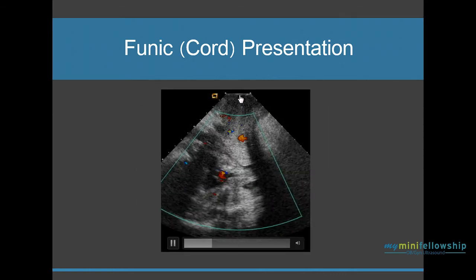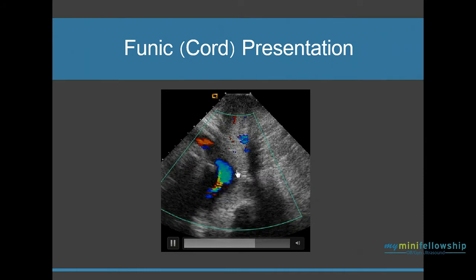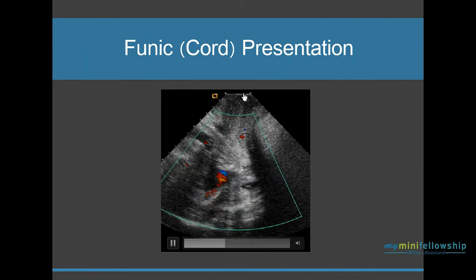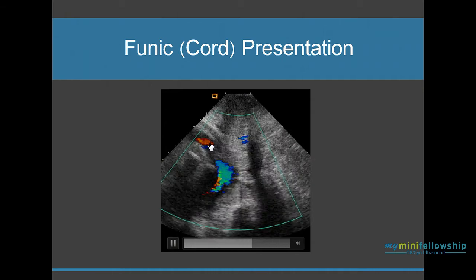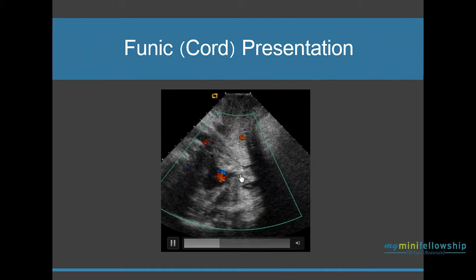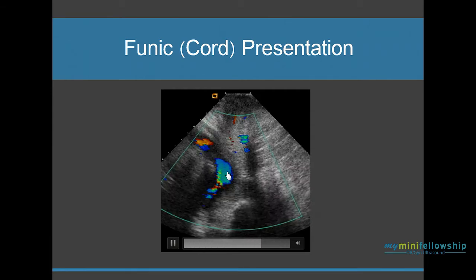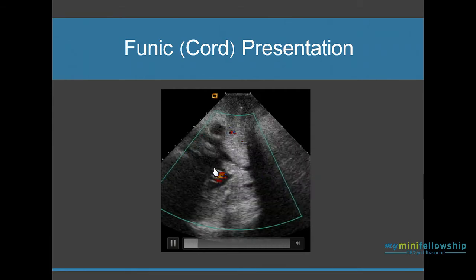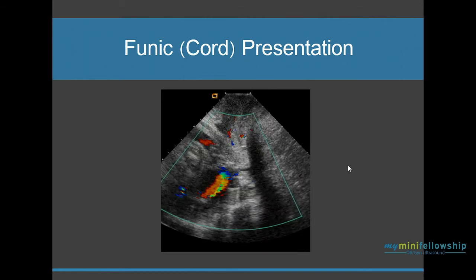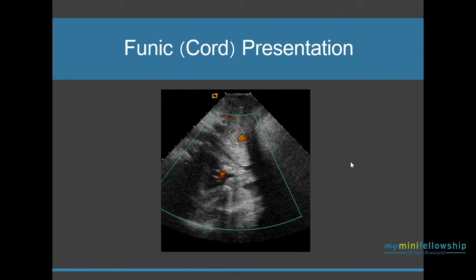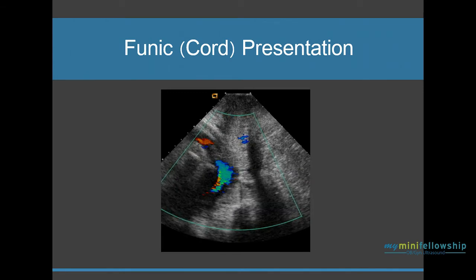In this cineclip — which is not as clear because the woman had an open cervix and this is a translabial image — you can see there's actually a foot coming down and the cord is presenting. So in this case, you could end up having a problem with the cord during delivery. Though theoretically, most of the time these presenting cords do not generate a problem because they often just get out of the way by the end.